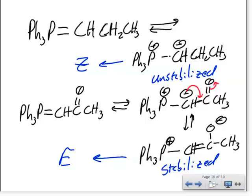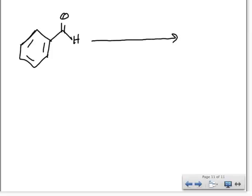So let's try a problem with this. We're going to use benzaldehyde as our aldehyde or ketone, and we're going to add this phosphorus ylid.